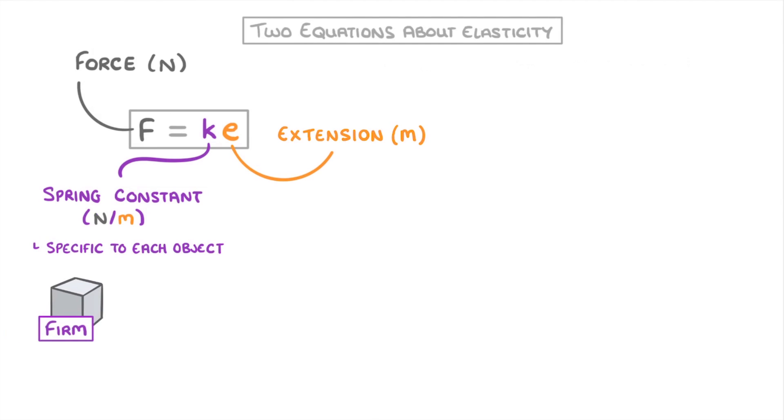The first, F equals KE, links the force that you apply to an object to how much it extends by when you apply that force, with K being the spring constant, which is specific to each object and as a measure of how firm or elastic the object is.